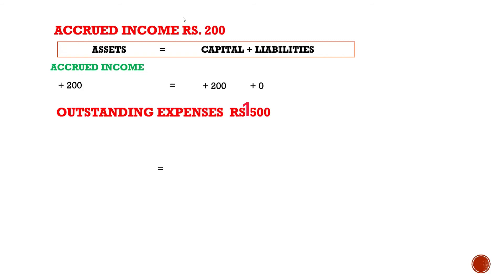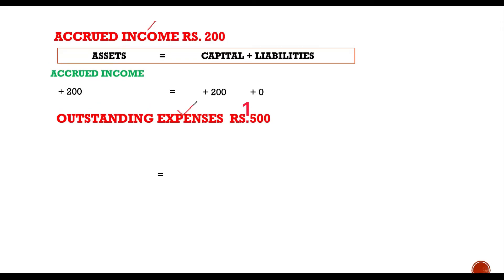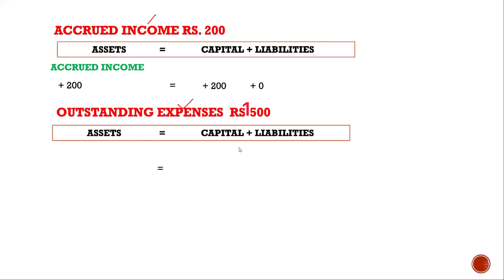Outstanding expense: just as income can be due, an expense can also be due. You have to pay someone but haven't paid yet, so this amount is your liability. It has not decreased your cash, so there is no effect on cash assets. However, this expense has been incurred and you have already availed the services for your business, so this will decrease your capital and outstanding expense will increase your liabilities.